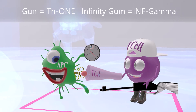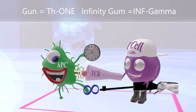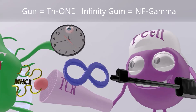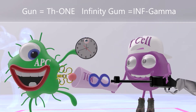The next step is when the Th1 cell secretes interferon gamma, which is why over here he's shooting this infinity gum out of his gun — infinity gum for interferon gamma, as the Th1 cell secretes interferon gamma.